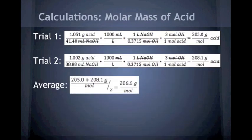In this slide, you can see our calculations for the molar mass of our unknown acid. We started with our number of grams of acid we started the trial with, and we divided that by our number of milliliters of sodium hydroxide used to titrate that acid.